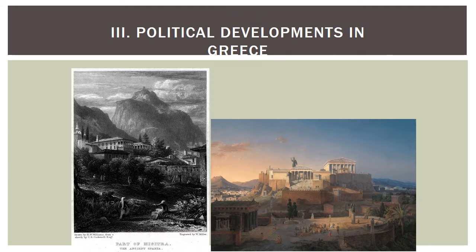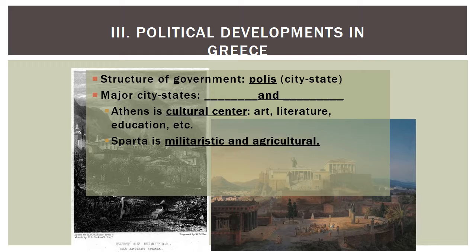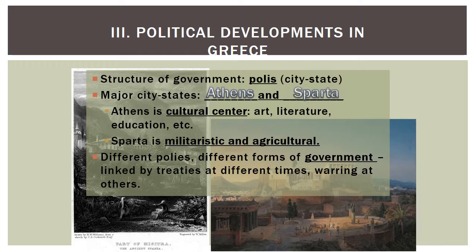These two images show the Athenian Acropolis, or polis — the center of the city, up on a hill. These are political buildings where people would go to vote. The structure of Greece's government was a polis, or city-state. Greece had many different city-states with their own individual government structures and rules. Our two major city-states are Athens and Sparta. Athens is well known for its culture — arts, literature, education, epic poems, and painted vases. Sparta is more known for its military prowess and was a largely agricultural society.